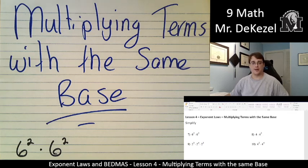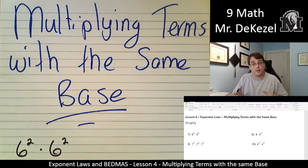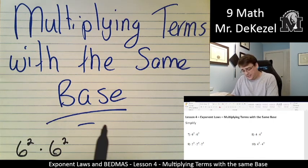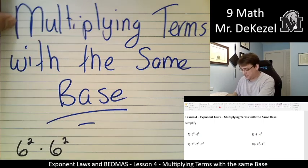Hello grade 9 math class, welcome back to another lecture. We are going to be doing lesson 4 today where we're multiplying terms together where they have the same base. They're going to have exponents, but the key is that they have the same base. I already wrote the question down, I'm very excited, I can't wait to show you what to do. The key here is that the 6 and the 6 are the same. Let's go.